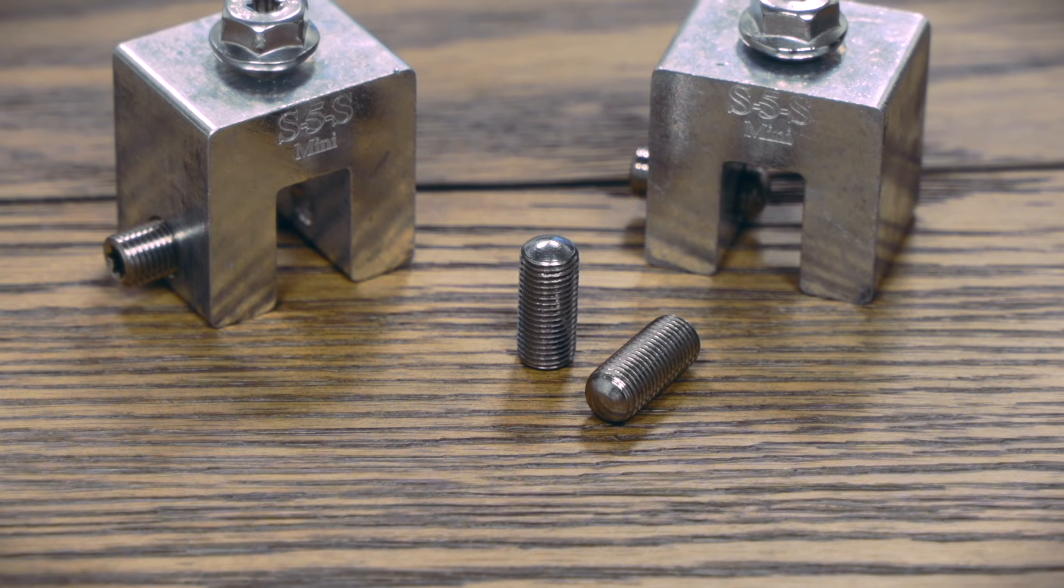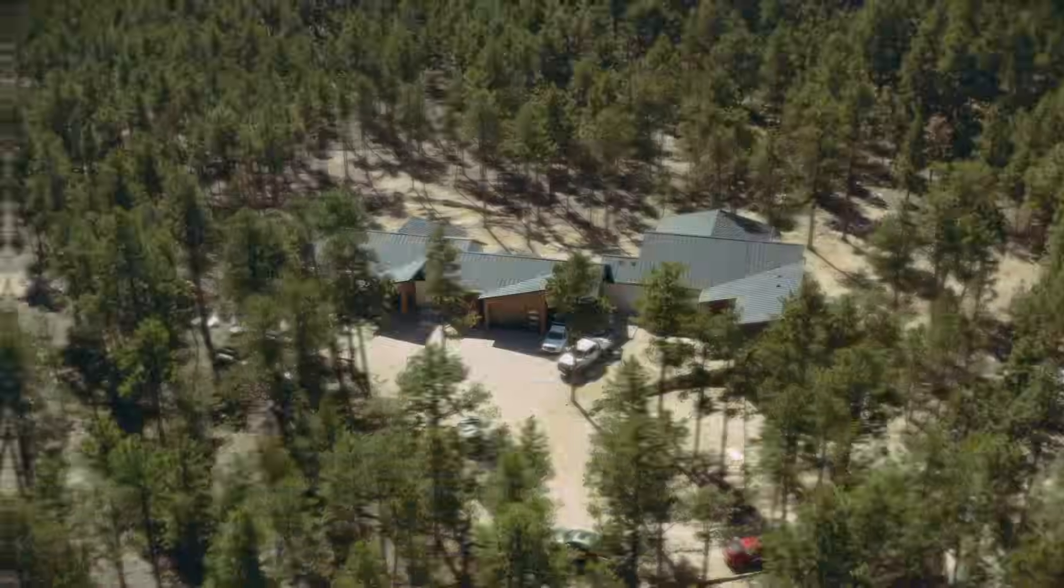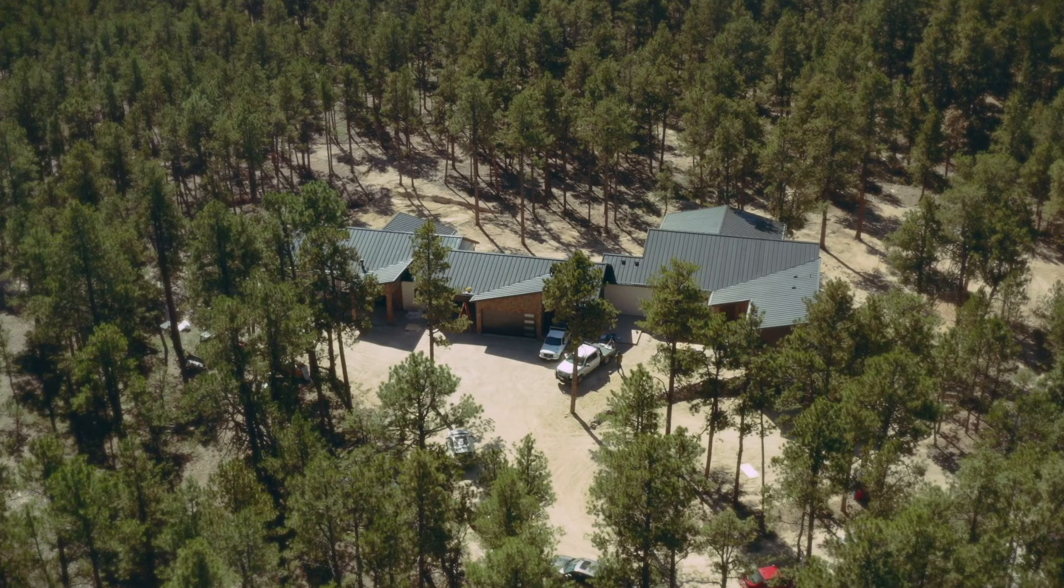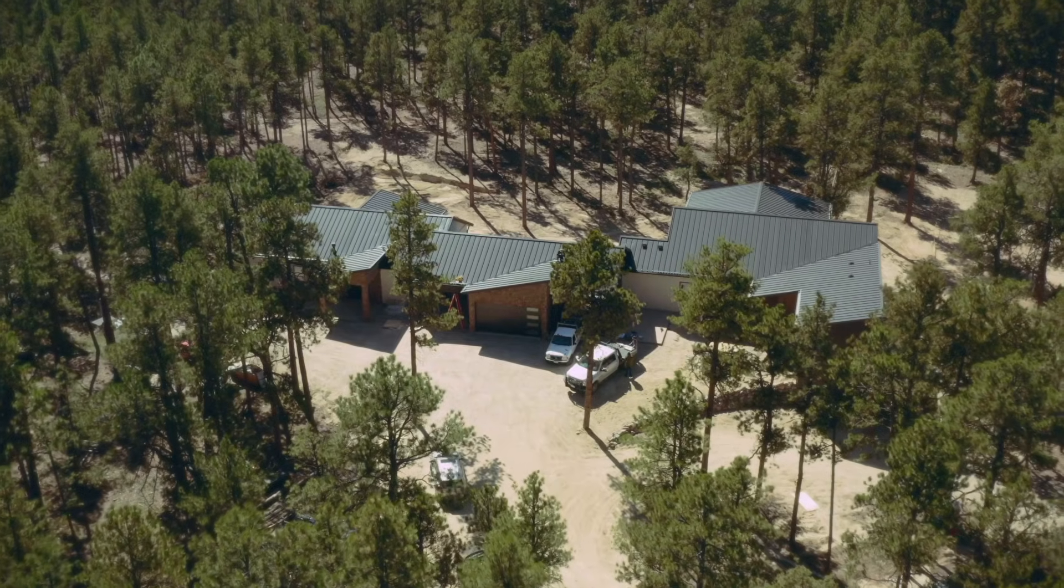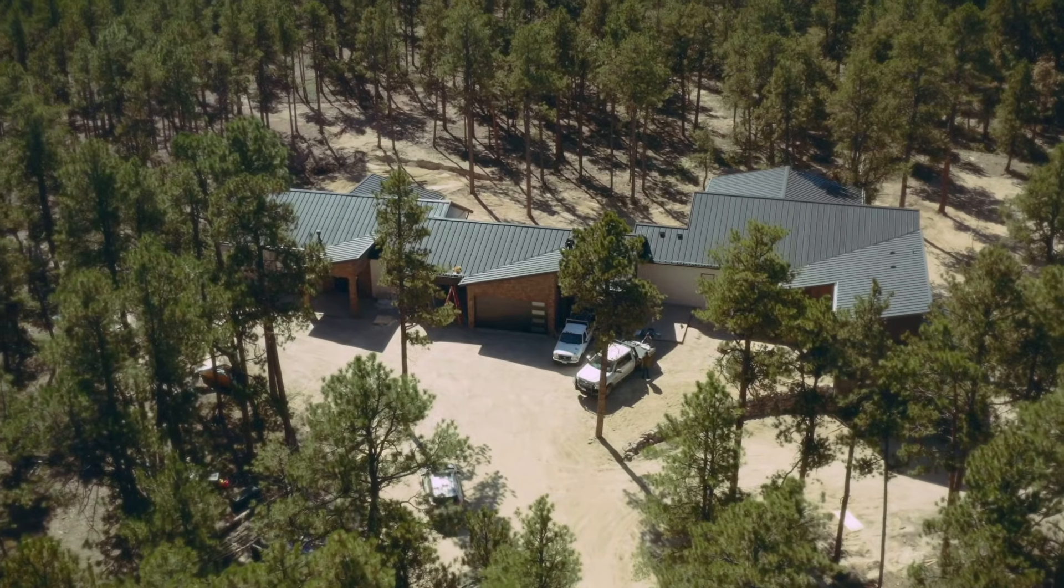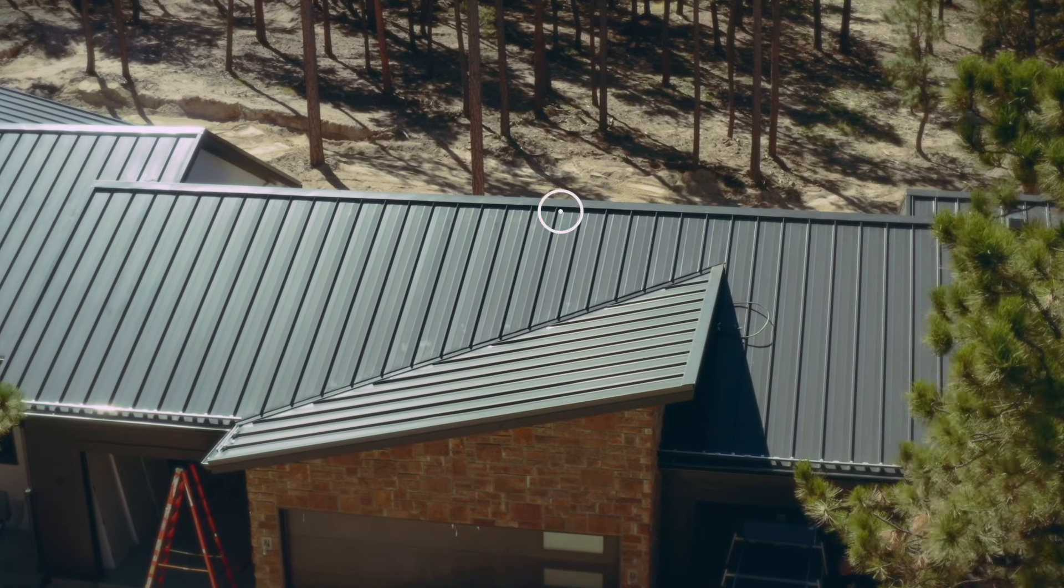Plus, their round point set screws create a secure connection without compromising your roof's warranty. As you can see, we're surrounded by trees here, so our first step is to find the best spots for both the Starlink dish and the cell booster using the Starlink app and line of sight. We'll be installing here and here.